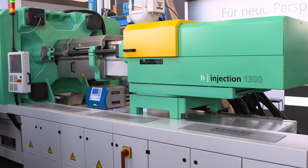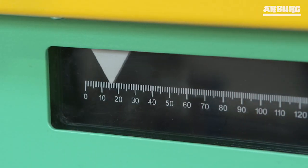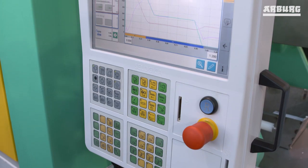Examples include position-regulated injection, automatic clamping force control, or the setup assistant. Using these functions, machines control and optimize themselves by means of adaptive process control.